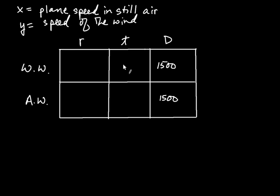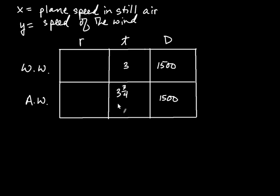The time against the wind was three hours and 45 minutes. Forty-five minutes is three-quarters of an hour, so let's write that as three and three-quarters. It's often convenient to write this mixed number as an improper fraction: four times three is twelve, and twelve plus three is fifteen, so I'm going to write that as fifteen-fourths.